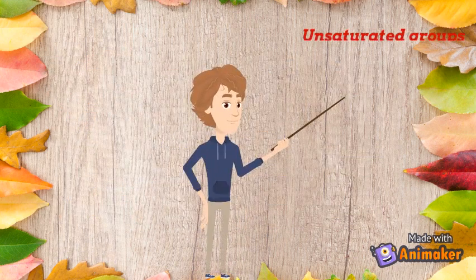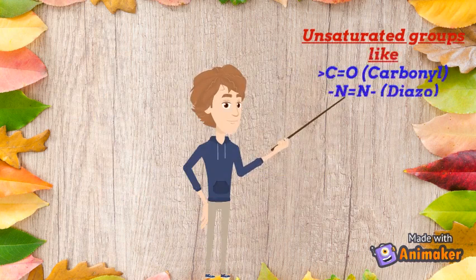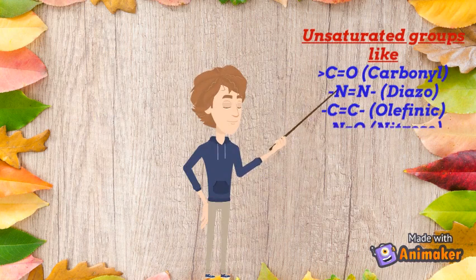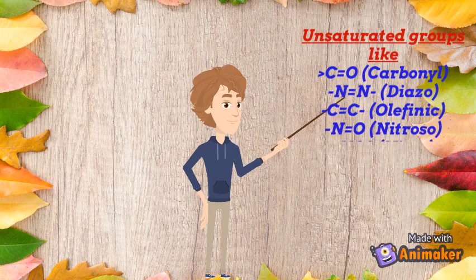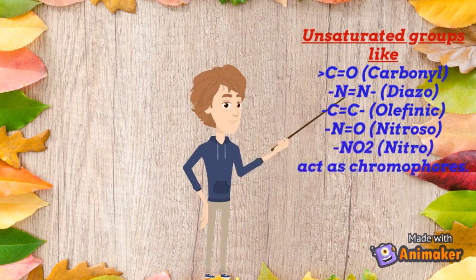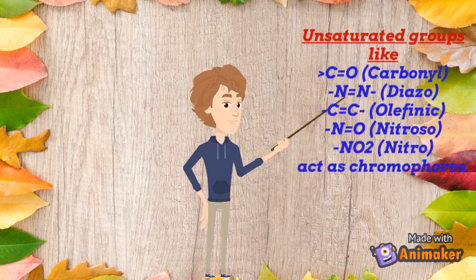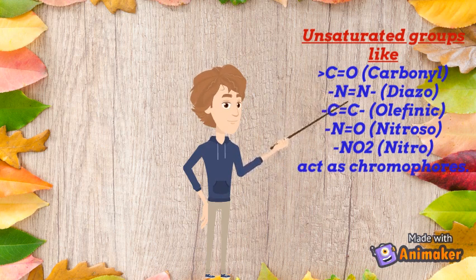There are various types of chromophores. For example: carbonyl, diazo, olefinic carbon-carbon double bond, nitroso, and nitro. There are pi to pi star and n to pi star electronic transitions due to the presence of these chromophore groups.